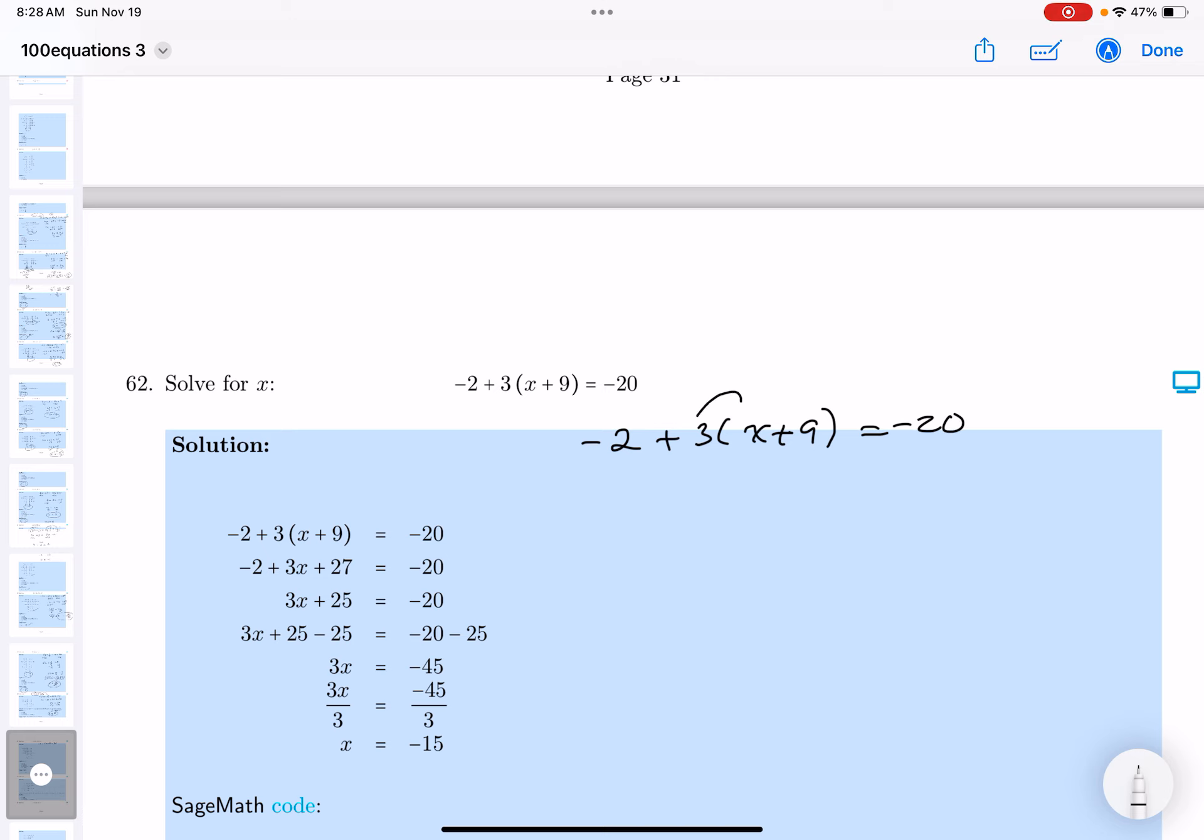I need to remove the grouping symbol by distributing the 3 across these two terms here. You get minus 2 plus 3x plus 27 equals minus 20.